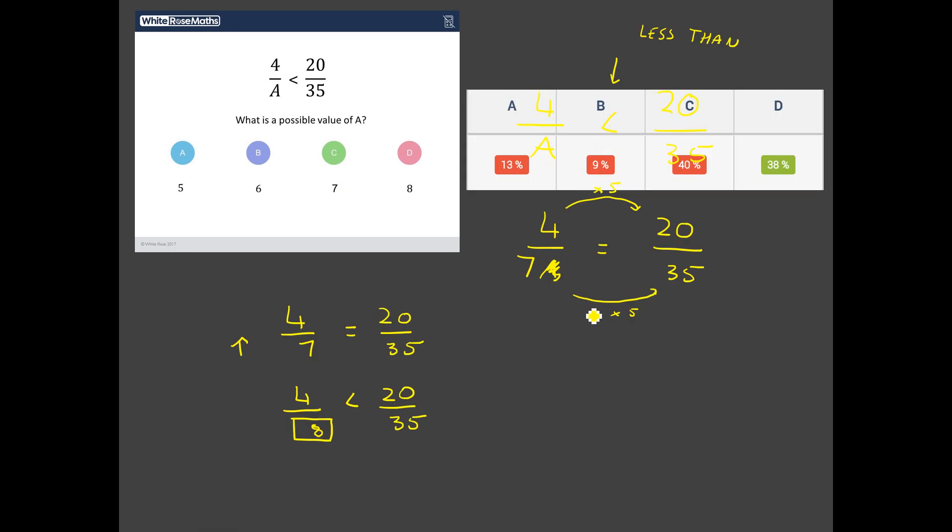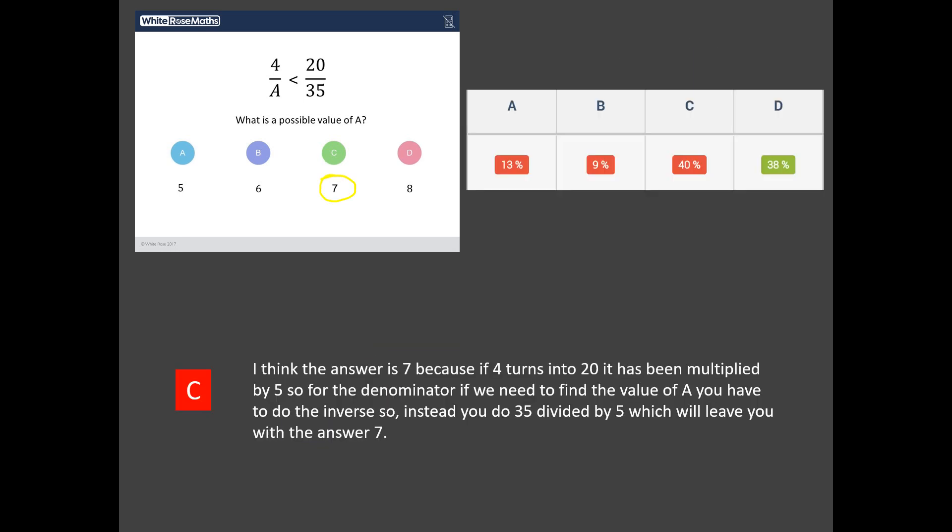Well, we've seen this, right, with our working out. 7 is definitely involved. But 7 is the number that gives us an equivalent fraction, not a smaller fraction. And indeed, if you read some of these students' answers, it's a beautiful explanation of how to work out an equivalent fraction. But again, we've got to read this question carefully and think that actually, the question's not asking for an equivalent fraction. It's asking for a fraction that is smaller.